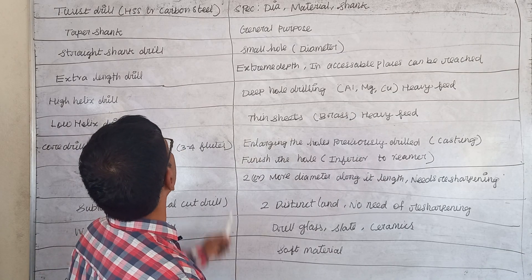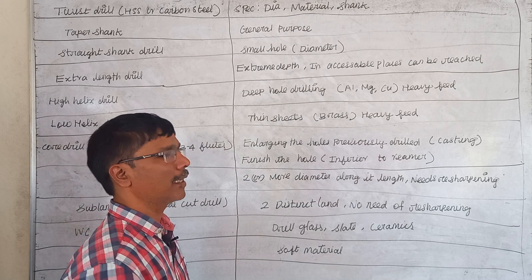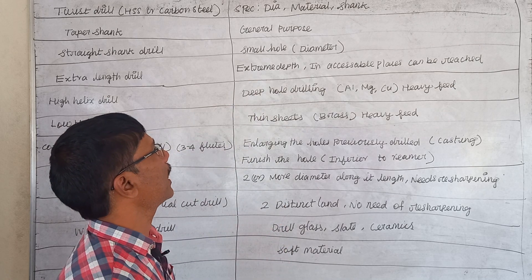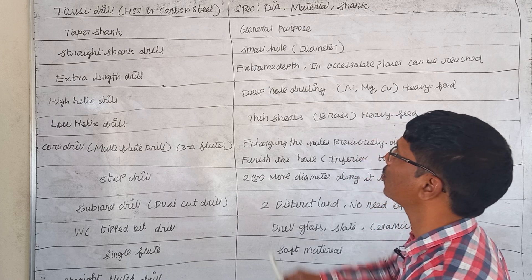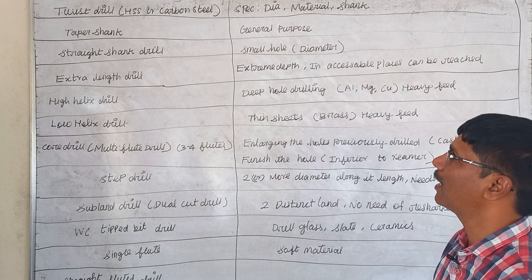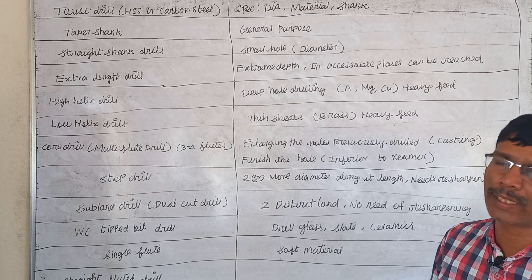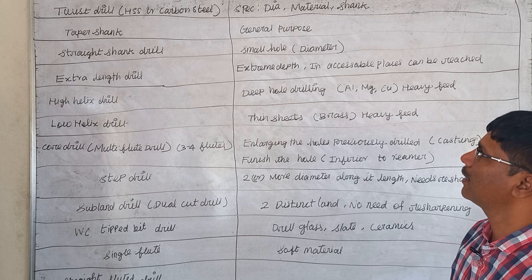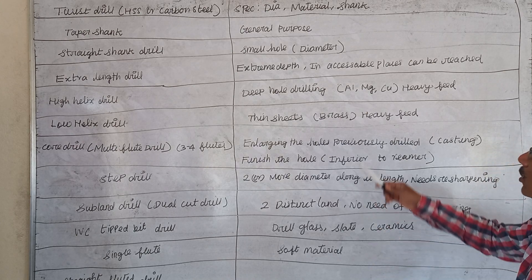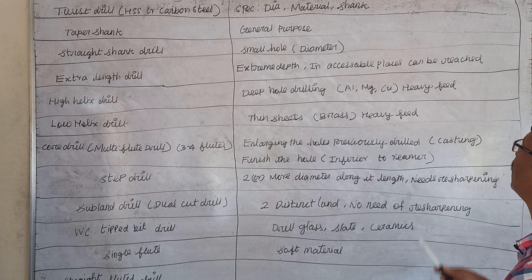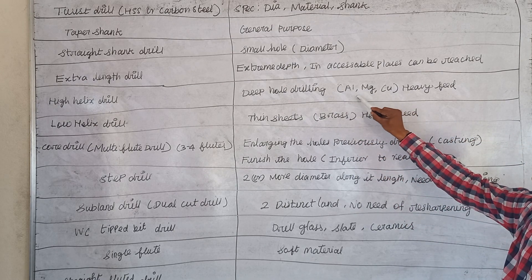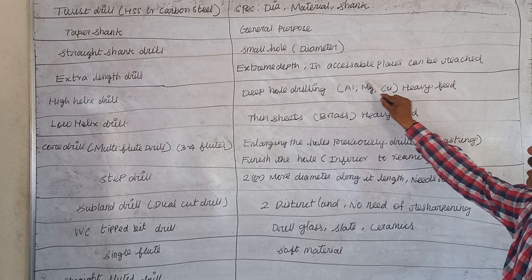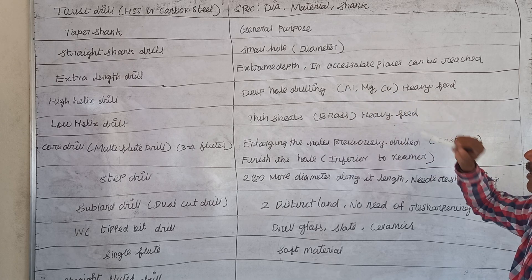A twist drill is usually made up of high speed steel and carbon steel, and it can be specified by diameter, material, or shank. A taper shank is used for general purpose, while a straight shank drill is used only for small hole diameters. An extra length drill is used for extreme depth and inaccessible places. The IX LX drill is used for deep hole drilling in ductile materials such as aluminium, magnesium, and copper, where high feed can be applied.